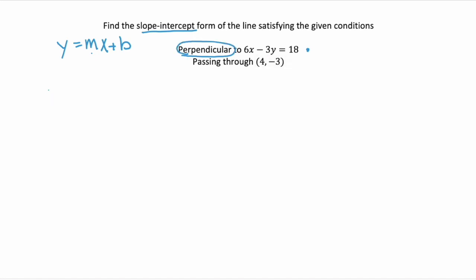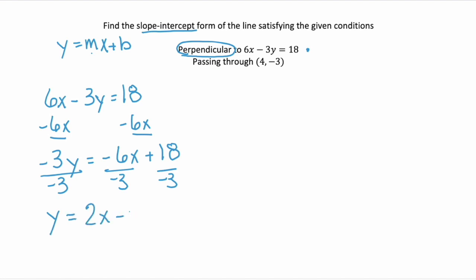So we're going to take our first line, our given equation, 6x minus 3y equals 18, and we're going to put it in slope intercept form. So subtract 6x, we have negative 3y equals negative 6x plus 18. And to isolate the y, we need to divide everything by negative 3. So we have y equals 2x minus 6.